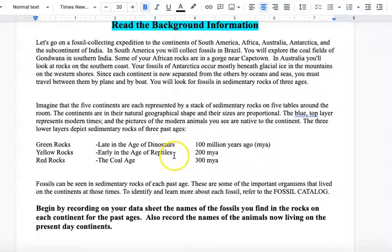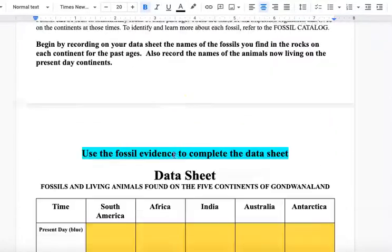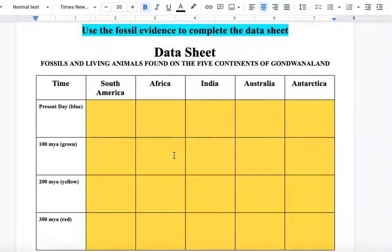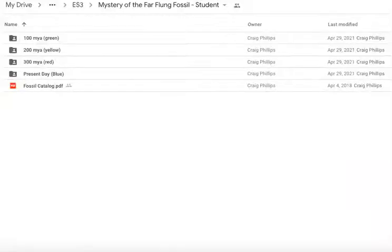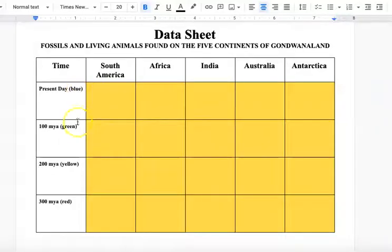The very first thing you need to do is collect data. You're going to fill in this data and the resource that you're going to need you will find in Google Classroom. I posted a link to this folder, and you know how it says green, yellow, red, blue in the fossil catalog. That corresponds to the blue, the green, the yellow, and the red.